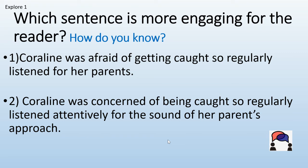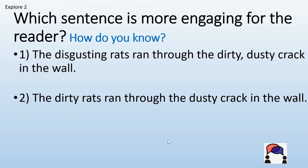Which sentence is more engaging for the reader? Sentence one: Coraline was afraid of getting caught, so regularly listened for her parents. Sentence two: Coraline was concerned of being caught, so regularly listened attentively for the sound of her parents' approach. Sentence two is more engaging — it has the past tense verb caught, and also adverbs making it a more engaging sentence. Another pair: the disgusting rats ran through the dirty, dusty crack in the wall — versus — the dirty rats ran through the dusty crack in the wall. Sentence one has more description: disgusting rats, dirty, dusty crack in the wall, so it is more engaging.